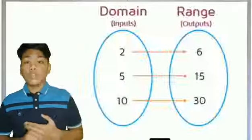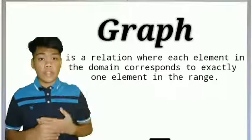The third way is the graph. Using the graph of the data points, you can determine if a relation is a function by using the vertical line test.